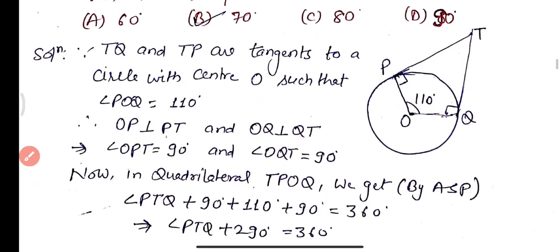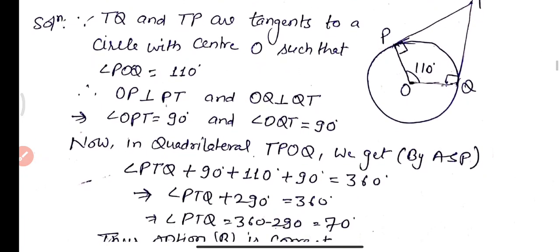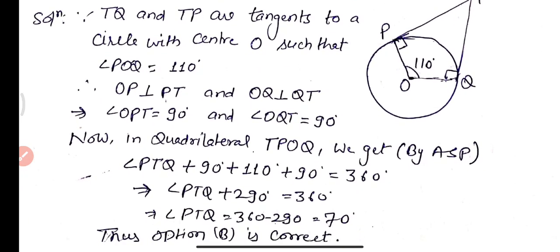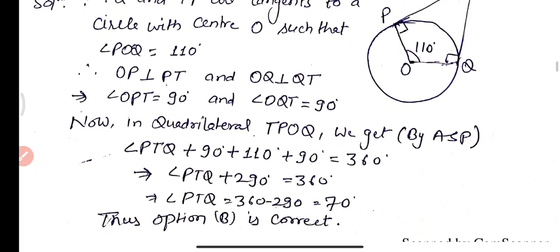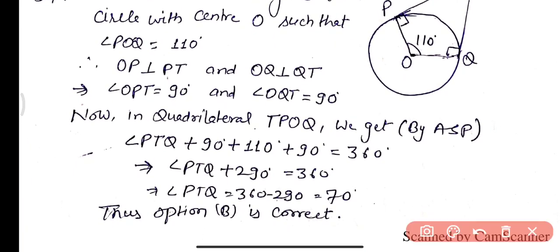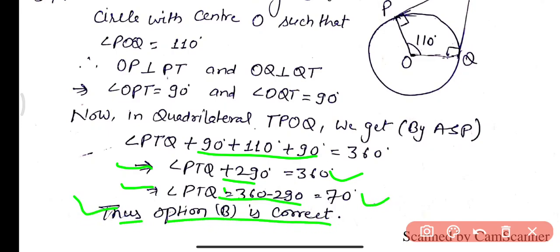In quadrilateral TPOQ, by the angle sum property: angle PTQ + 90° + 110° + 90° = 360°. Therefore angle PTQ + 290° = 360°, so angle PTQ = 360° − 290° = 70 degrees. Thus option B is the correct answer. This is all about Question 2.